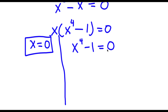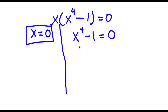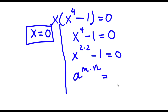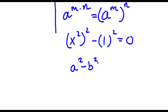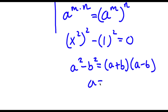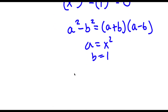So x to the power of 4 minus 1 equals 0. Well, 4 is the same thing as 2 times 2. So I get x to the power of 2 times 2 minus 1 is equal to 0. Now if I have something in the form a to the power of m times n, we can write this as a to the power of m to the power of n. So x to the power of 2 times 2 becomes x squared to the power of 2. And 1 is the same thing as 1 squared, so I have x squared to the power of 2 minus 1 squared equals 0. Now using the difference of squares — a squared minus b squared equals a plus b times a minus b — with a as x squared and b as 1, I get x squared plus 1 times x squared minus 1 is equal to 0.